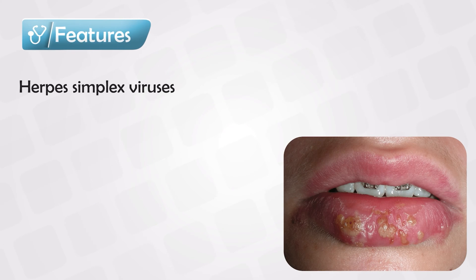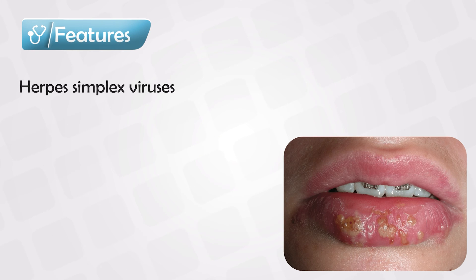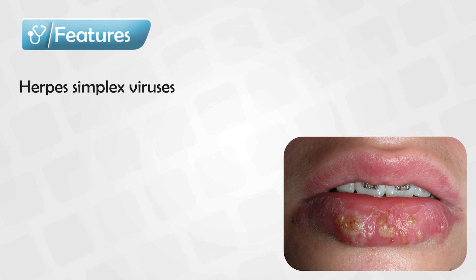Herpes skin infection is mainly caused by herpes type 1 and type 2, known as herpes simplex virus 1 and 2. These can occur anywhere in the body where there was direct contact between the skin of an infected patient and the skin of the recipient.